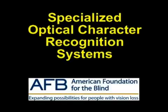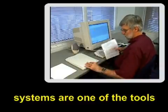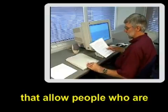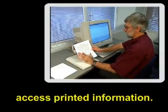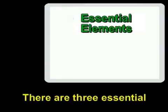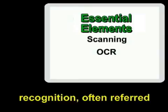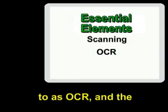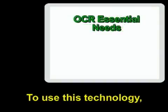Specialized Optical Character Recognition Systems are one of the tools that allow people who are blind or visually impaired to access printed information. There are three essential elements to these systems: scanning, Optical Character Recognition, often referred to as OCR, and the reading of the text via synthesized speech.